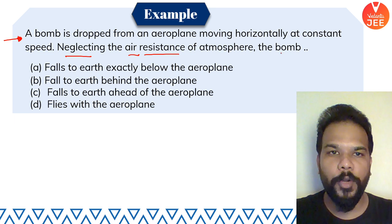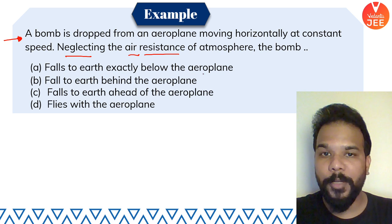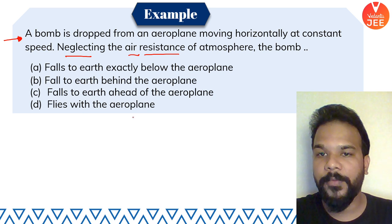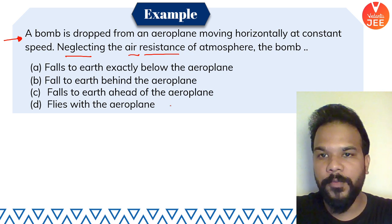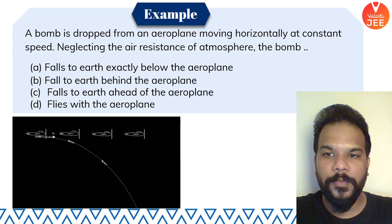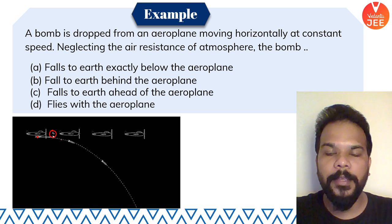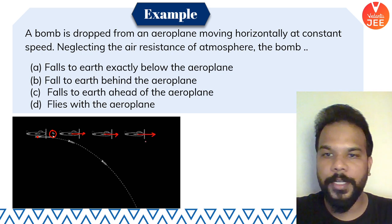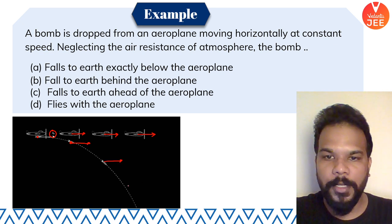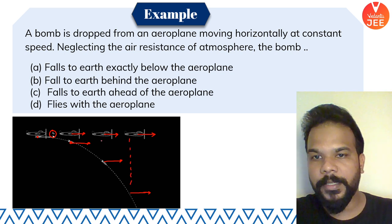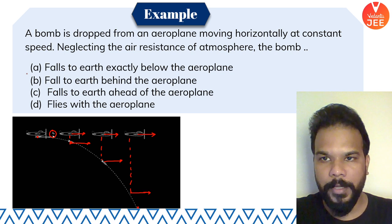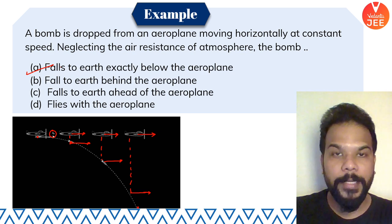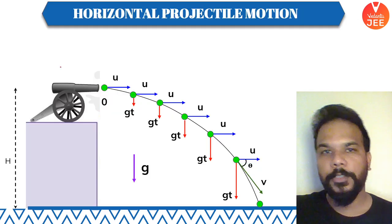A bomb is dropped from an aeroplane moving horizontally at constant speed. Neglecting air resistance, where will the bomb fall — exactly below the aeroplane, behind it, ahead of it, or will it fly with the plane? The answer: the bomb falls exactly below the aeroplane. When connected to the plane, the bomb had the same horizontal velocity. Since horizontal velocity doesn't change during projectile motion, the bomb always stays just below the plane.